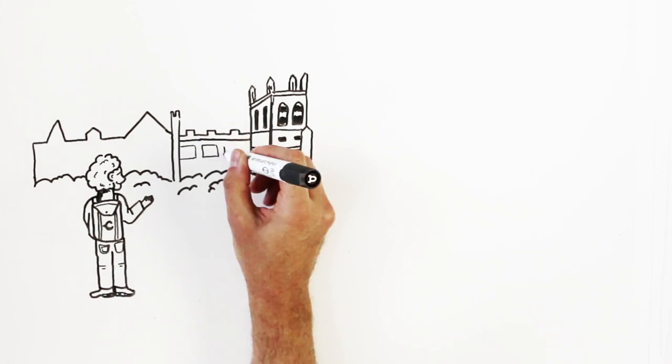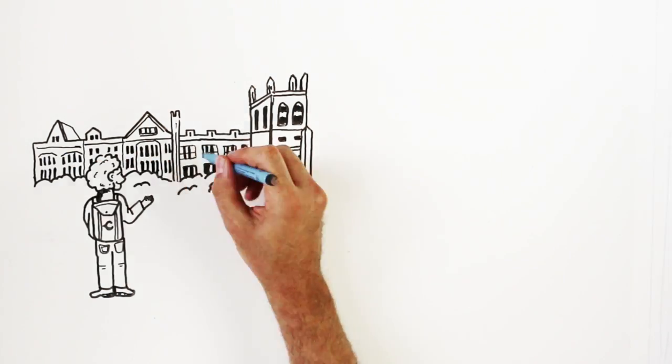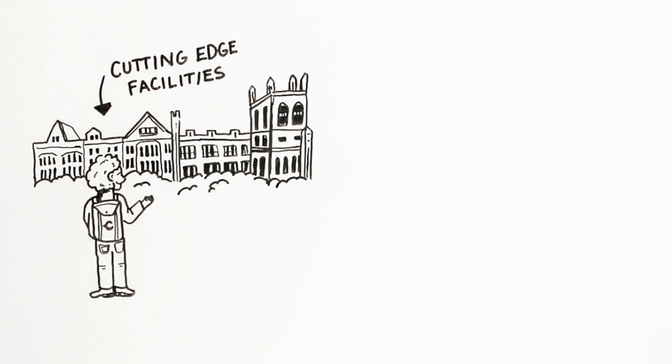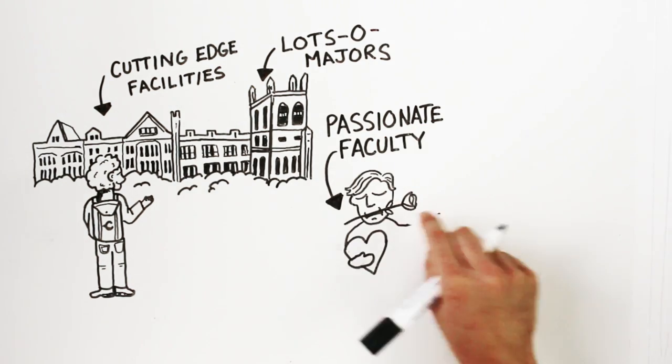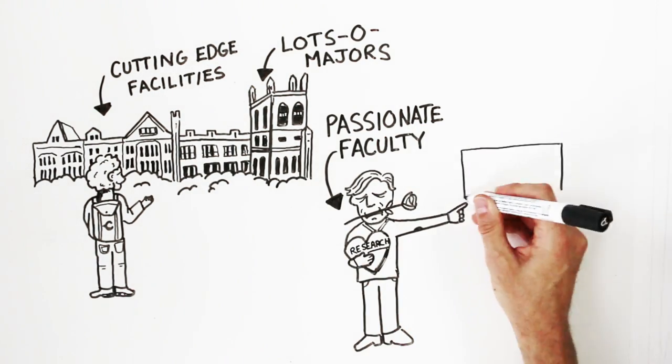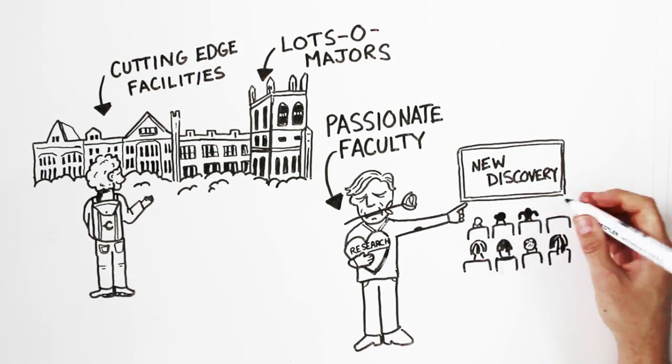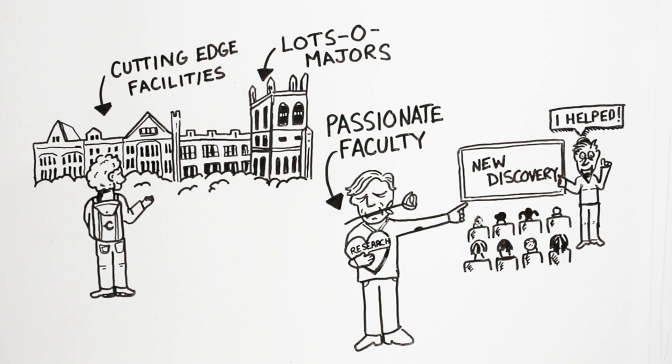For the student, the opportunities at a research university like UChicago are endless. Cutting edge facilities, a broad range of majors, faculty who are passionate about their work and bring current research and recent discoveries right into the classroom, often with help from their own students.